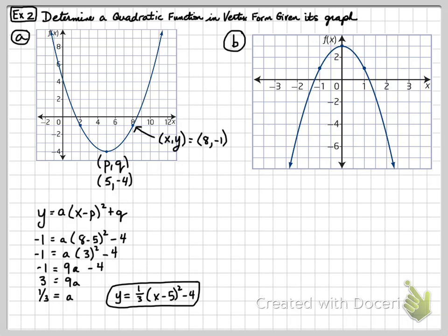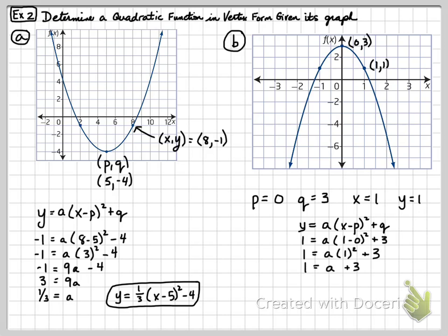And the second one. Here I have P being 0, Q being 3, X being 1, and Y being 1. I can plug that into my equation again, Y is A times X minus P squared plus Q. Now when you plug all these in, 1 minus 0 is 1, squared is 1, times A is 1A. So what ends up is 1 is equal to A plus 3. And subtracting 3 from both sides, A will equal negative 2. That means my equation is going to end up Y is equal to negative 2 times X minus 0 squared plus 3. And the X minus 0 squared can just simplify to be X squared. So our final answer is negative 2X squared plus 3.